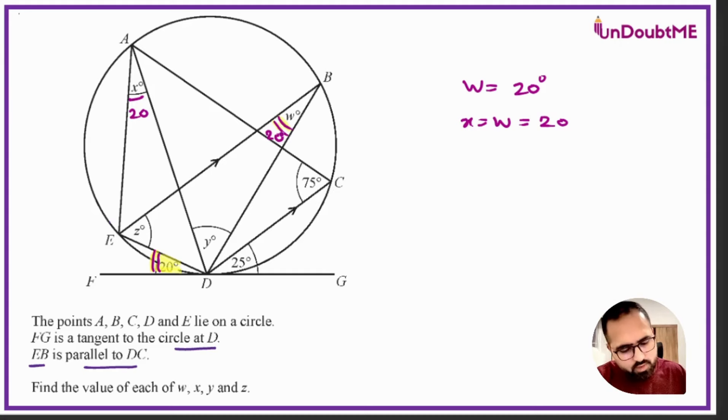Now we are done with at least two of them. Next we can try to find y. For finding y, we can use that parallel line point. Lines EB and DC are parallel, so we can see alternate interior angles over here. If this is 20, then this will also be 20. Now I got this angle, I can very easily try to work on y.